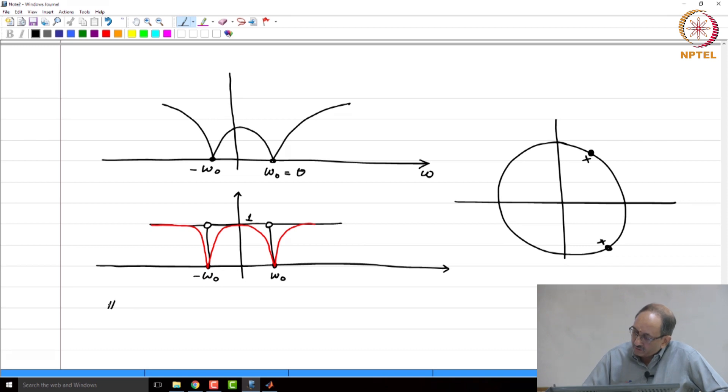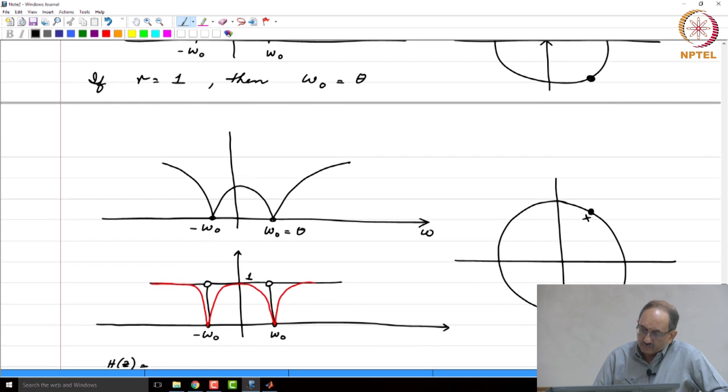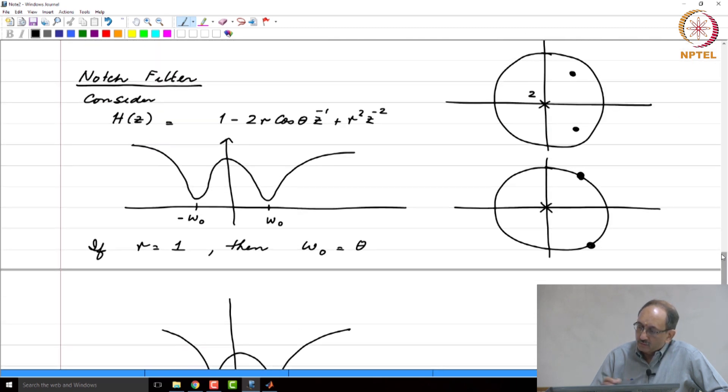Now, in terms of transfer function, so the numerator, remember as far as the notch filter goes, this is 1 minus 2 r cos theta z inverse plus r squared z to the minus 2. For the notch filter, r equals 1. Therefore, without any other modification, the transfer function is 1 minus 2 cos theta z inverse plus z to the minus 2. All I have done is, I have made r equal to 1 which is what it should be for the notch filter.